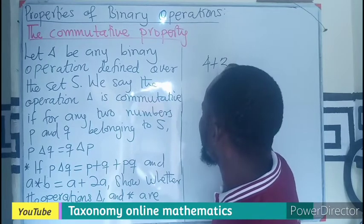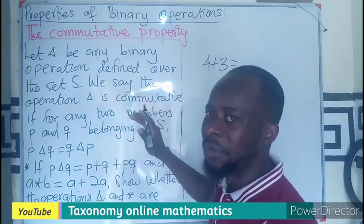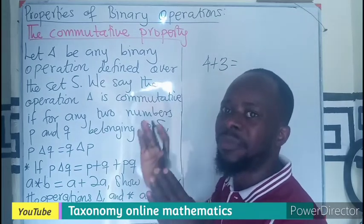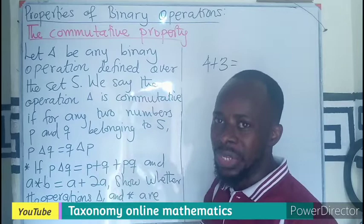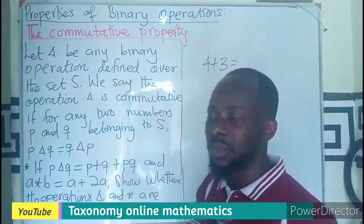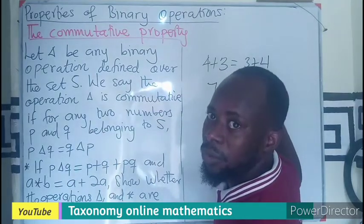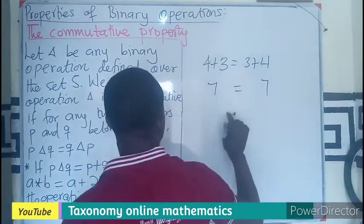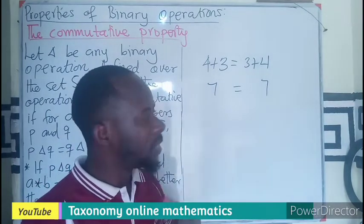We know 4 + 3, the result will not be different from if the 3 comes before the 4. That is, the arrangement, the order in which the numbers are arranged, does not affect the result. So this will be 7, then 3 + 4 will also be 7. We know that addition is commutative.